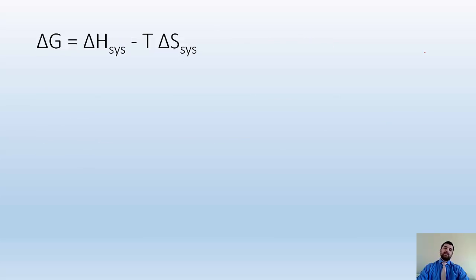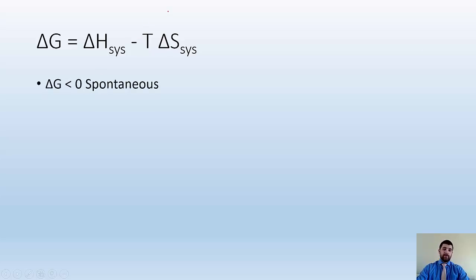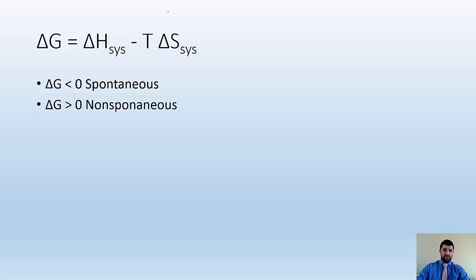So we have this equation: delta G, the change in Gibbs free energy, equals delta H, the change in enthalpy, minus T times delta S, where T has to be in Kelvin. When delta G is less than zero — a negative value — the reaction is spontaneous. When it's greater than zero, it is non-spontaneous. And delta G equals zero at equilibrium.